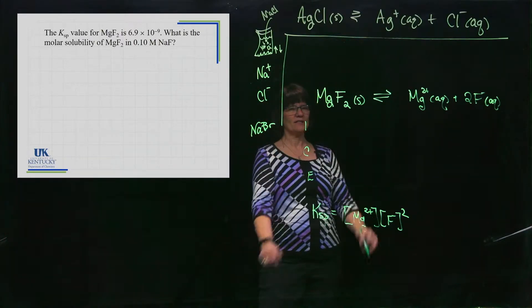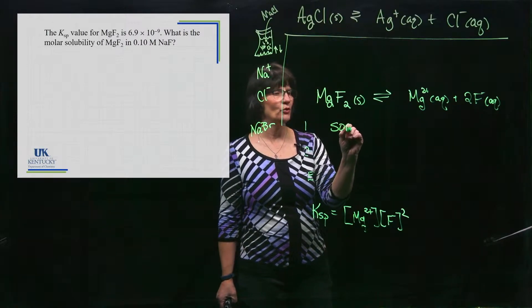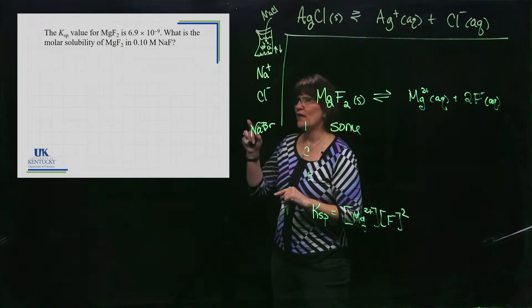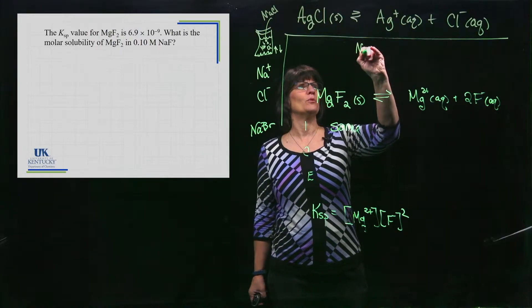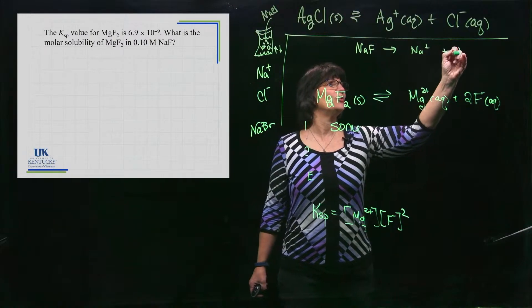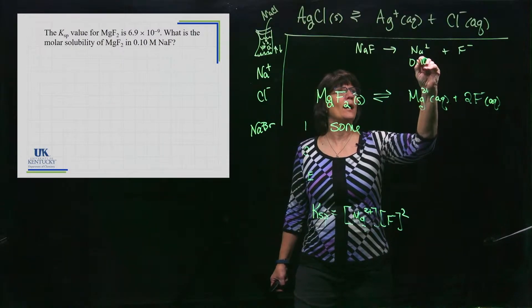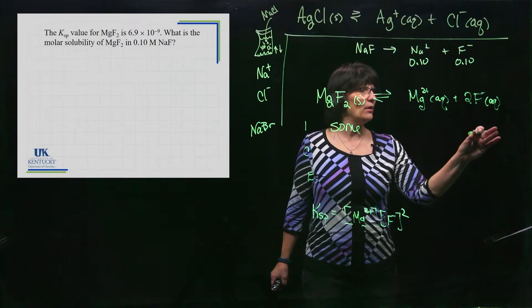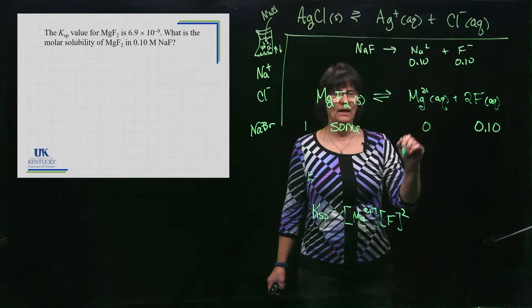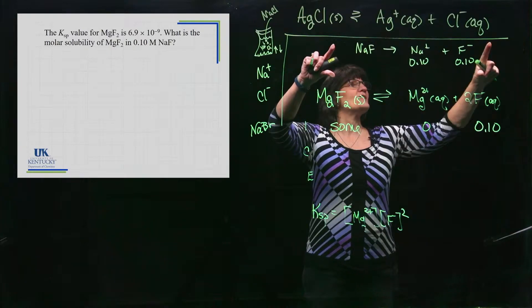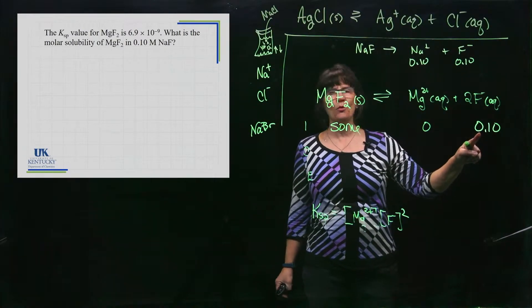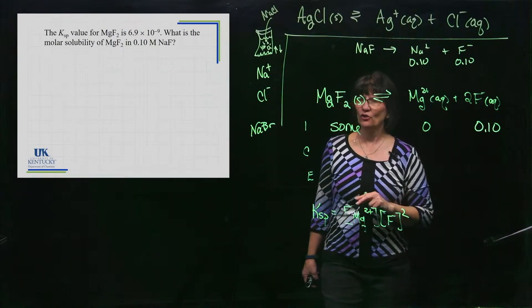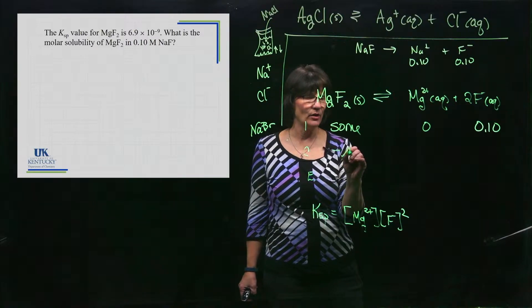Now we're ready to fill in the ICE table. We're not dumping magnesium fluoride just into water — we're dumping it into a solution that's 0.1 molar sodium fluoride. Sodium fluoride is soluble; it's going to break completely apart and dissolve, giving us those two ion concentrations. So when I come to the initial line, I'm not putting zero here — I'm putting 0.10 here for the fluoride. A lot of students want to include this reaction too, but that gave me 0.1; my starting point is 0.1 before this reaction ever takes place.